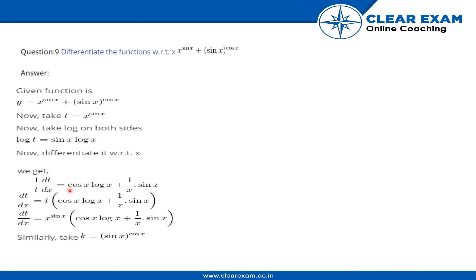So we get 1 by t dt by dx equals cos x into log x plus 1 by x sine x. Cross multiplying t on the other side, we get dt by dx equals x to the power sine x into cos x log x plus 1 by x sine x.